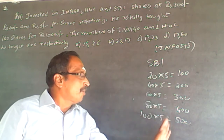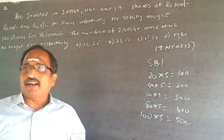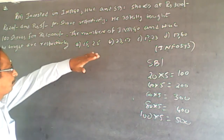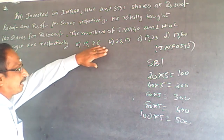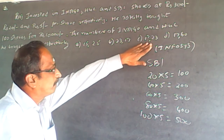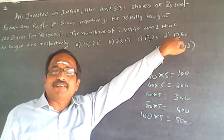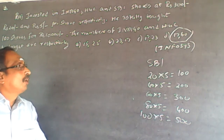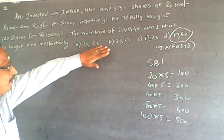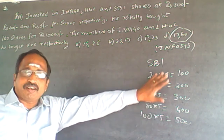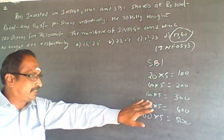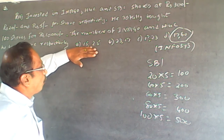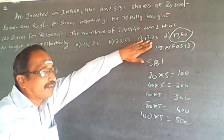So you can have multiple answers for this. When you look at the options: 15+25 = 40, 23+17 = 40, 17+23 = 40, but 17+60 = 77, so option D (17-60) is ruled out. From the remaining options you have 15-25, 23-17, and 17-23, all with 40 shares of Indigo and HUL.